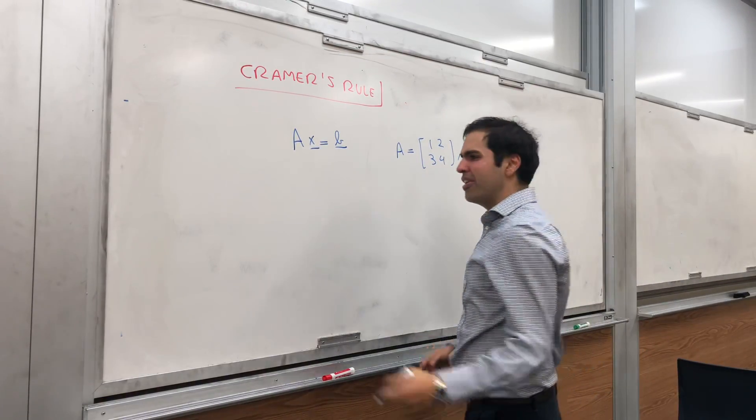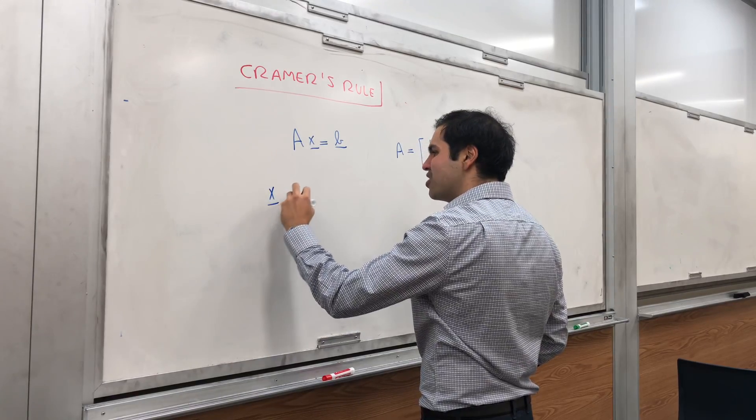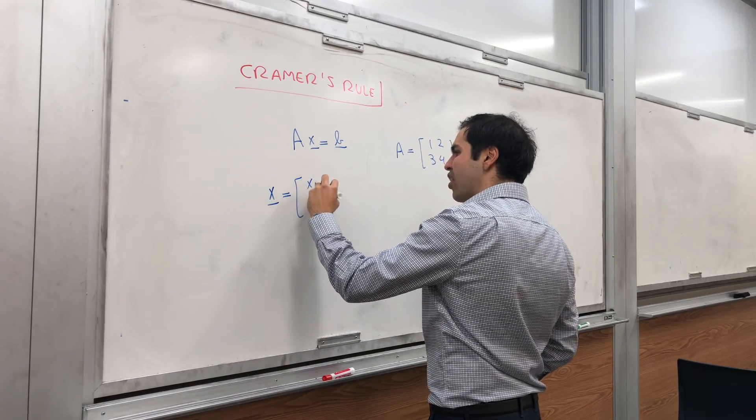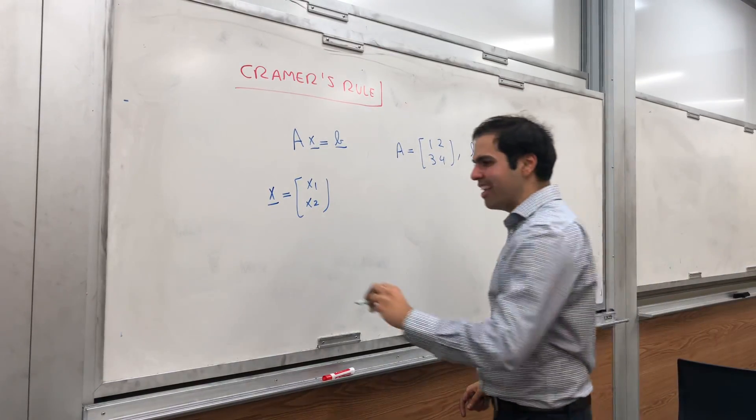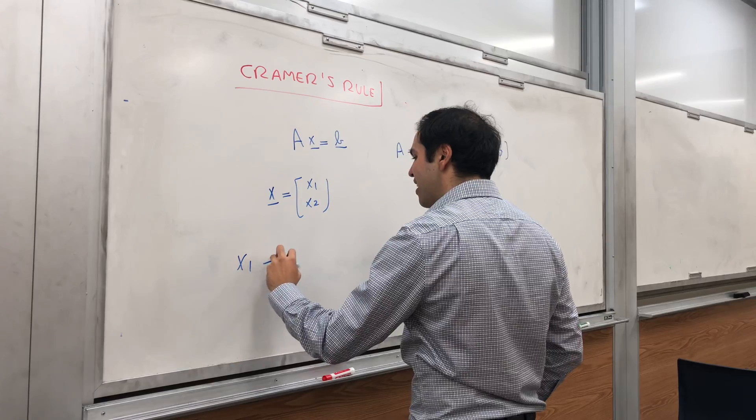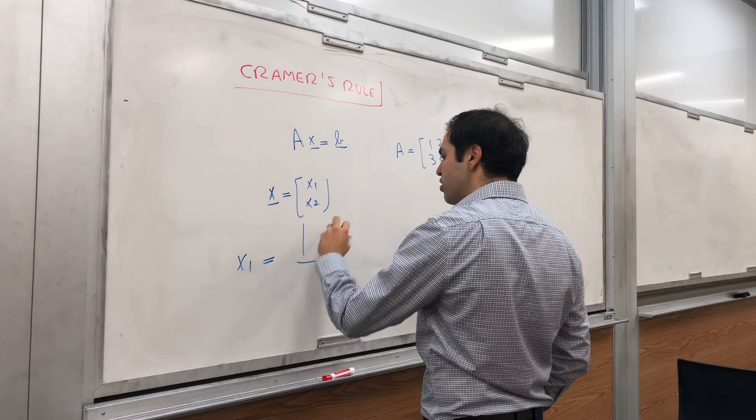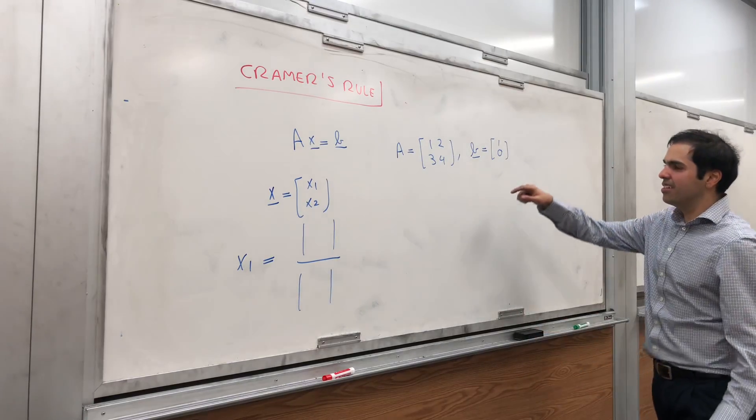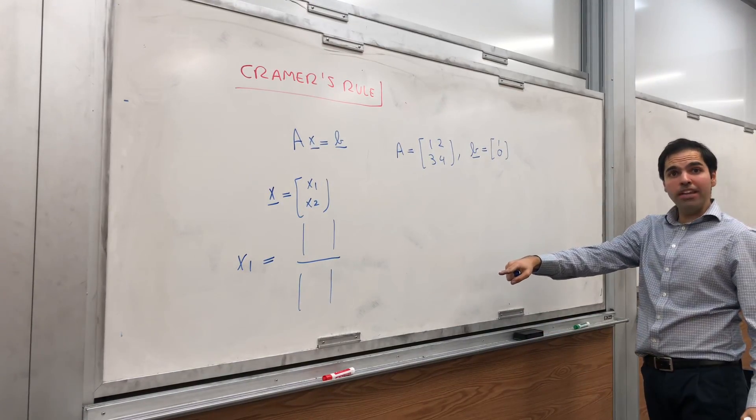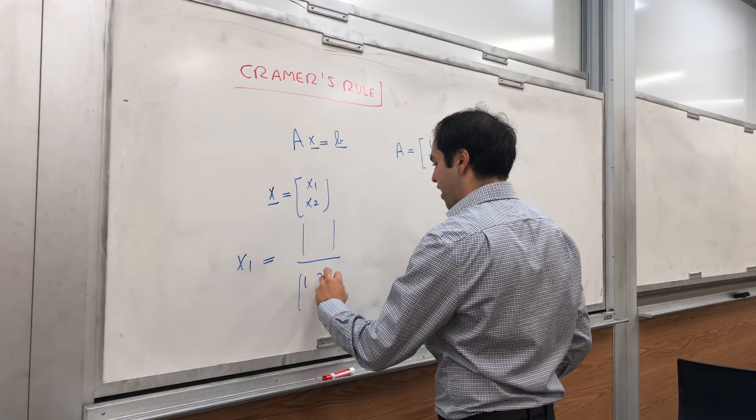Here's the cool thing: it gives you an explicit way of solving this equation using determinants. And how do you find this? What is the explicit way? Namely, all you do is take a quotient of two determinants. The denominator is always the determinant of A.